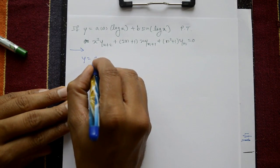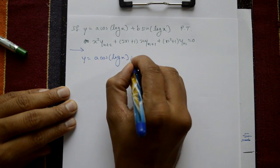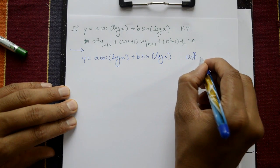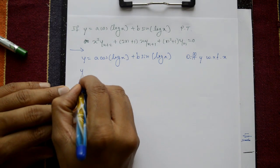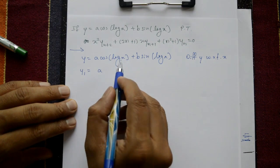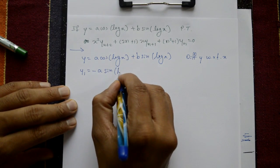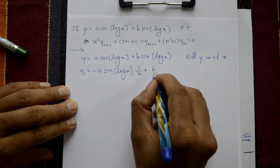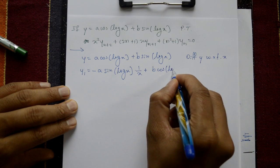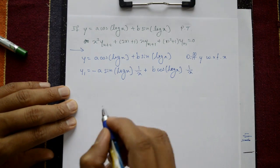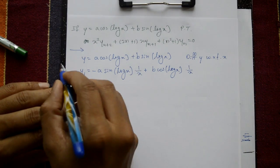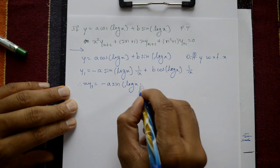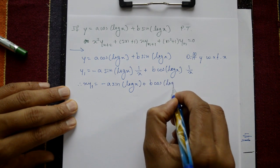Solution: given y equals a·cos of log x plus b·sin of log x. Differentiate y with respect to x. y becomes y1 after differentiation. A is constant. Differentiation of cos is minus sin, so minus a·sin of log x, into log x differentiate into 1 by x. Plus b as it is, differentiation of sin is cos, cos of log x, again log x differentiate into 1 by x. So, 1 by x common, take cross multiply: x·y1 equal to minus a·sin of log x plus b·cos of log x.